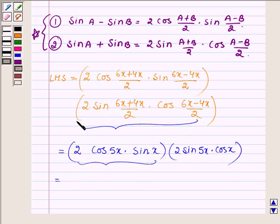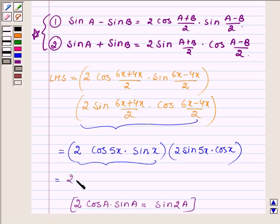Now this is in the form of 2cosA·sinA, whose formula is sin2A. So we can write it as 2cos(5x), now taking this 5x here.